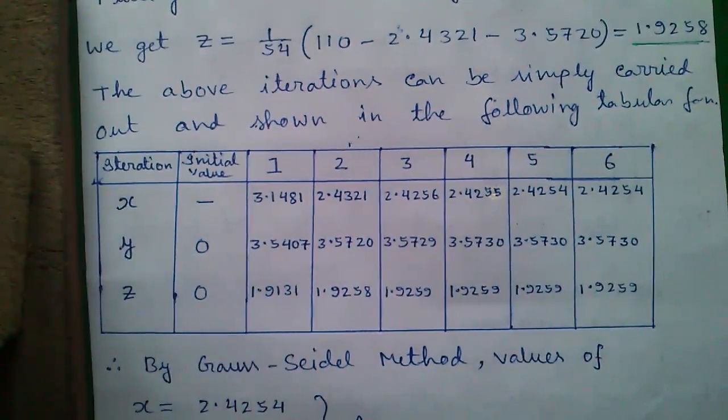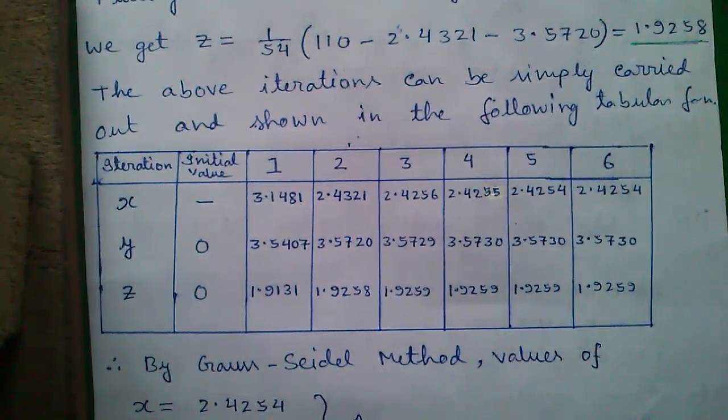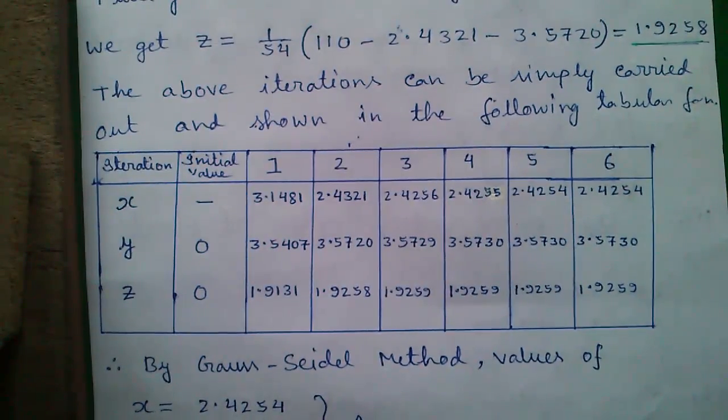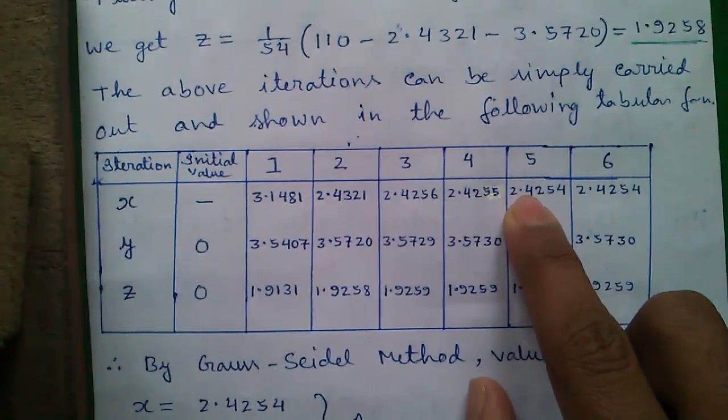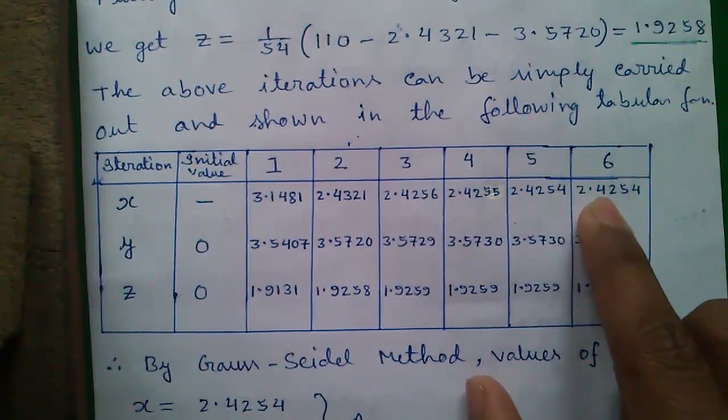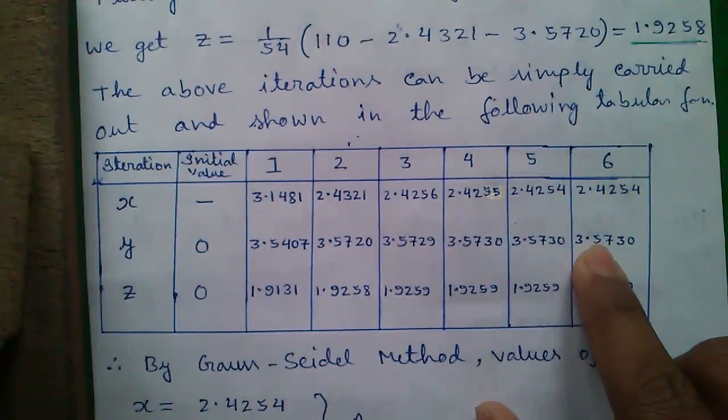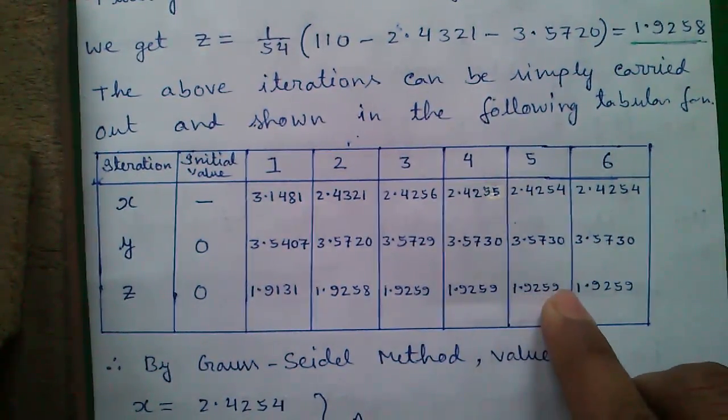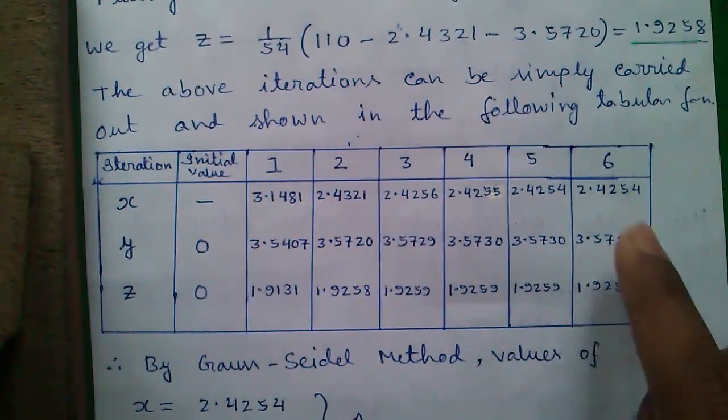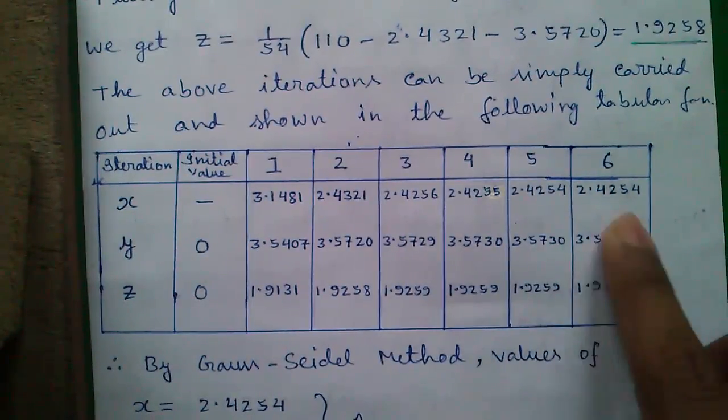Next question, when to stop our calculation? We will stop our calculation when we will get two successive values equal. That means, you see in fifth and sixth iteration, the values of x is 2.4254, also in sixth iteration. And similarly for y, 3.5730 and 3.5730. And for z, 1.9259, 1.9259. So we have got same values in iteration fifth and iteration sixth. So this is our required answer.